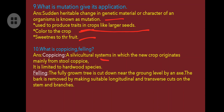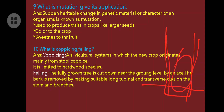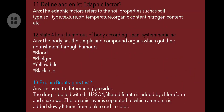What is coppicing and felling? Coppicing is a silvicultural system in which a new crop originates mainly from the stool — it is limited to hardwood species only. Felling: the fully grown tree is cut down near the ground by an axe, the bark is removed by making suitable longitudinal and transverse cuts on the stem and branches.